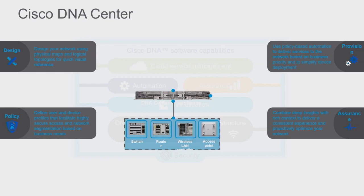We can take it a step further and start applying policy in two different aspects: macro-segmentation and micro-segmentation. Macro-segmentation: I have my employee network and my guest network — there's no reason they should be talking to each other at all. Micro-segmentation: inside the employee network I have the accounting group, marketing group, and IT group. IT should be able to talk to everyone, but marketing and accounting shouldn't talk to each other. That's micro-segmentation. And we're looking at that as a user, device, and group — not an IP address. We're simplifying all of this.